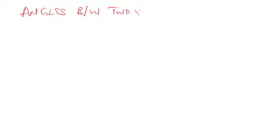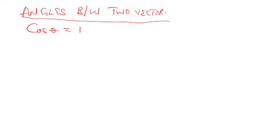Now let's move further into angles between vectors. When we talk about the angle between two vectors, there is a stated formula: the cosine of the angle theta is equal to the dot product of the vectors divided by the product of the absolute values of each vector. In our previous lesson we covered steps for calculating the dot product, and today we'll focus on getting the absolute value of a vector.